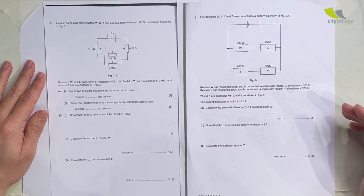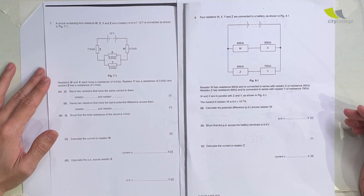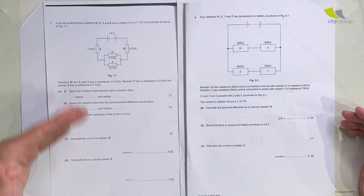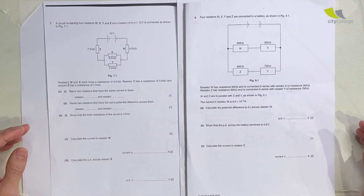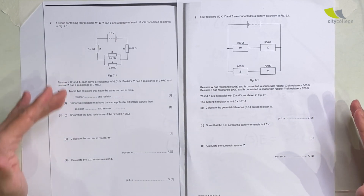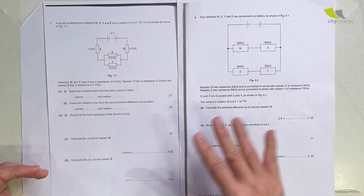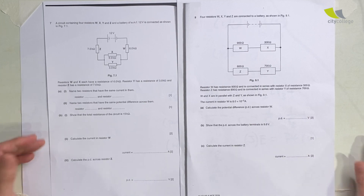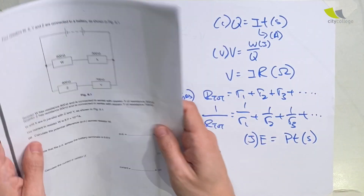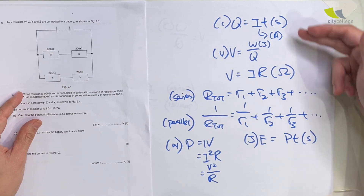Questions about DC circuits are a constant in Paper 2 and they can constitute between 5 to about 8 marks — that's close to 10 percent of the paper. So it's important that you know how to do them because they are very easy to score. Let me go through a few years of papers. The main thing they are testing is that you are able to recall and apply all these formulas.